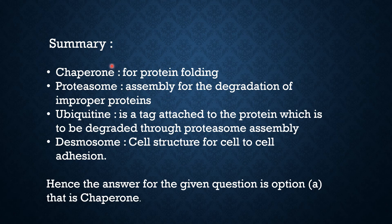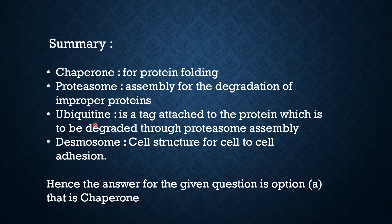Here I have summarized the whole video. So the first option — chaperone — is for protein folding. Another option — proteasome — is for degradation of improper proteins. Then ubiquitin is the next option — it is attached to the protein and directs it toward degradation. And desmosome is for cell-to-cell adhesion. So the answer would be option A — chaperone — which is required for protein folding.